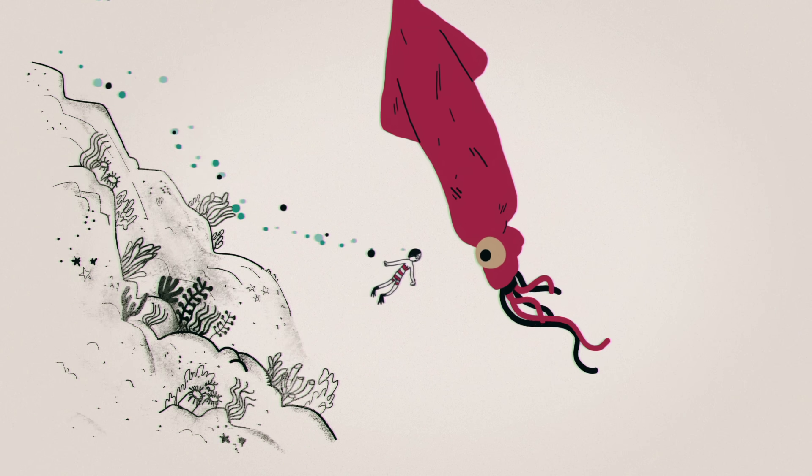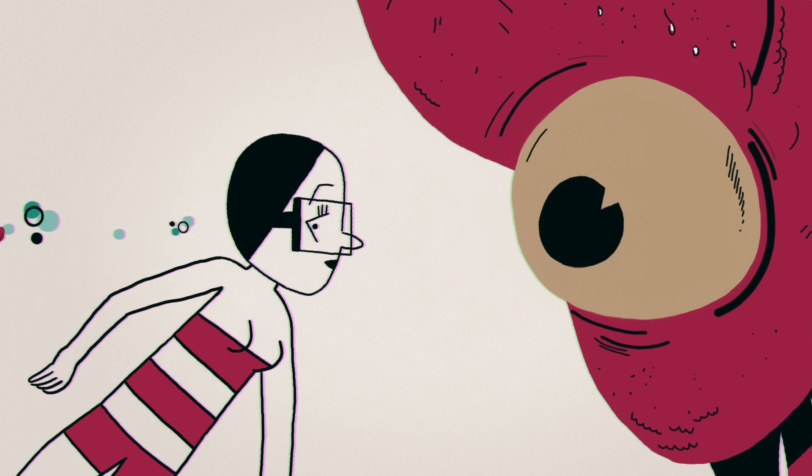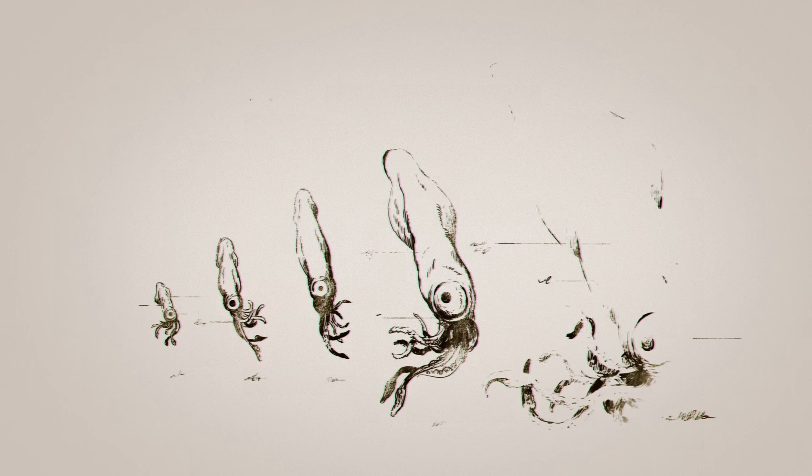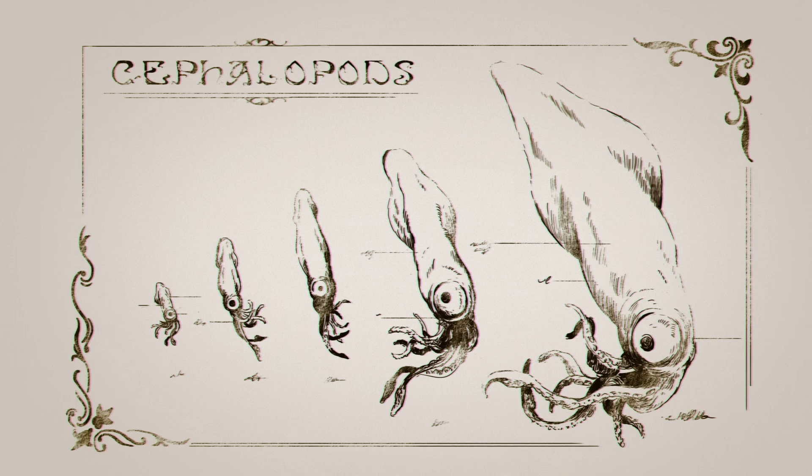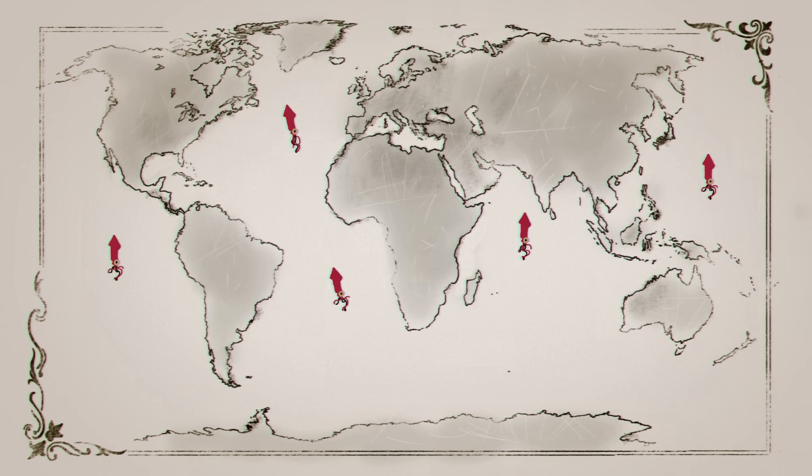Ranging in size from the giant's impressive 14 meters to the 2.5 centimeters of the southern pygmy squid, these creatures fall into the group of animals known as cephalopods. There are about 500 squid species worldwide, and they live in all the world's oceans,